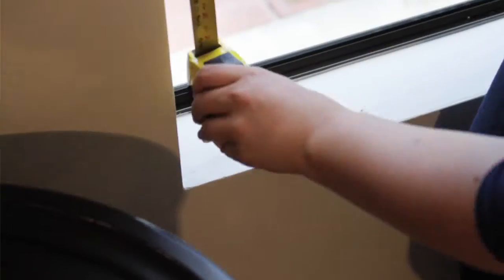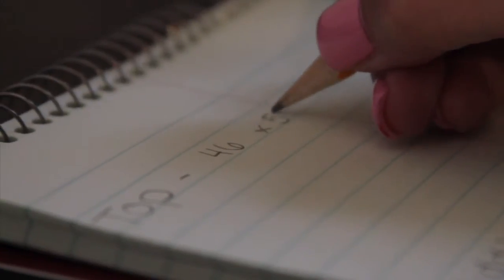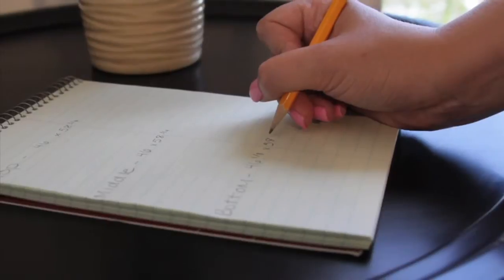You'll do the same thing vertically on the left, middle, and right. Round the vertical measurements up to the nearest eighth of an inch. Use the longest measurement for height.